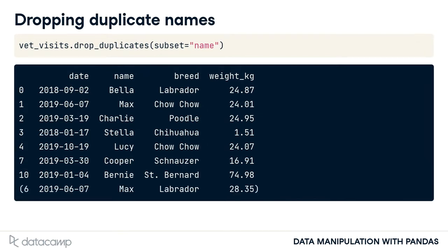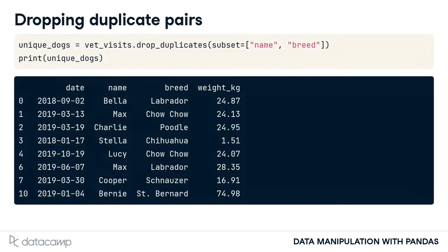We have Max the Chow Chow, but where did Max the Labrador go? Because we have two different dogs with the same name, we'll need to consider more than just name when dropping duplicates. Since the two Maxes are different breeds, we could drop rows with pairs of name and breed listed earlier in the dataset. To base our duplicate dropping on multiple columns, we can pass a list of column names to the subset argument — in this case, name and breed. Now both Maxes have been included and we can start counting.